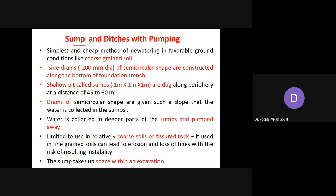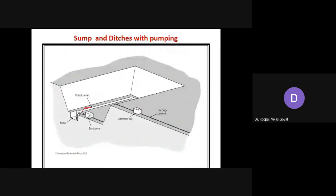Next is sump and ditches with pumping. This is a very simple and cheap method for dewatering. It consists of side drains of 200 mm diameter semi-circular shape, constructed along the bottom of the foundation trench in intervals of 45 to 60 meters. The collector drains are constructed first, and the slope of the drain is adjusted so that water flows towards the sump.